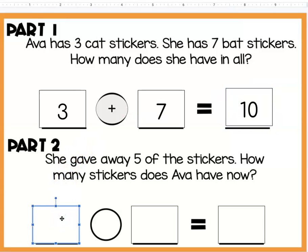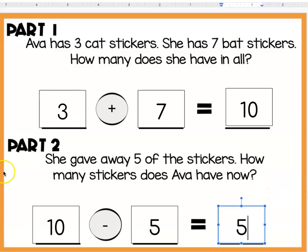But we're not done yet. Part two says she gave away five of the stickers. So now she's got ten. Remember from up there? She gave them away, then she's losing them. So we're going to put the subtraction sign in here. Five is what she gave away. If you're really good, you know doubles: five plus five equals ten. So if you take away five from ten, then you have five left.